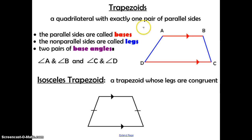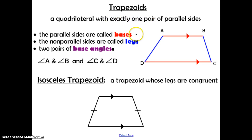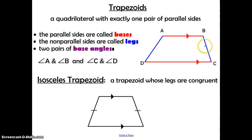A trapezoid is a quadrilateral with exactly one pair of parallel sides. This is different from the parallelograms we talked about the past two days that have two pairs of parallel sides. Trapezoids have exactly one pair. Those parallel sides are called the bases — we mark parallel lines with that extra set of arrows. The two sides that are not parallel are called the legs.